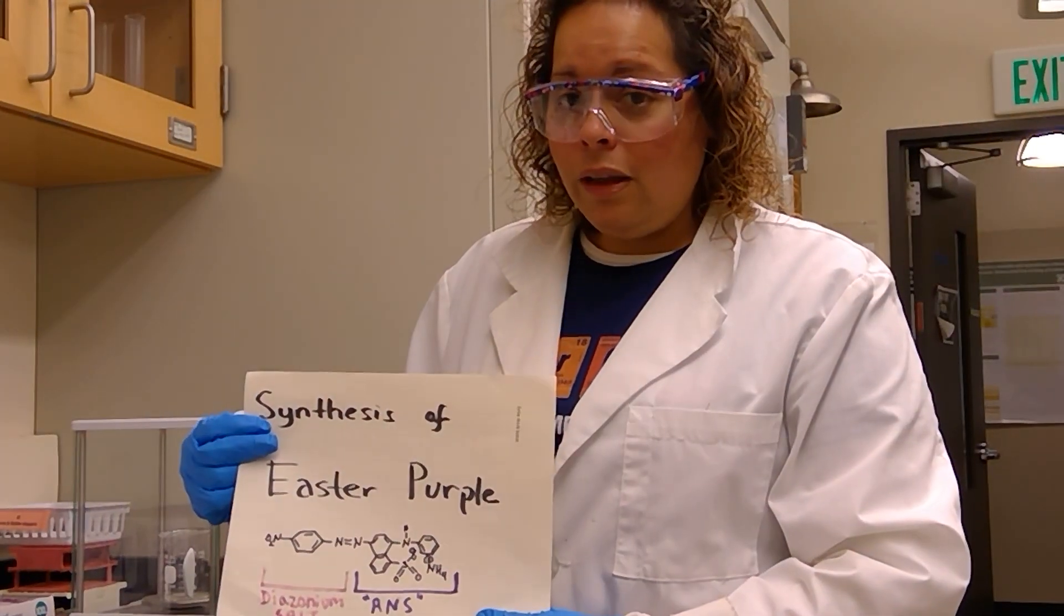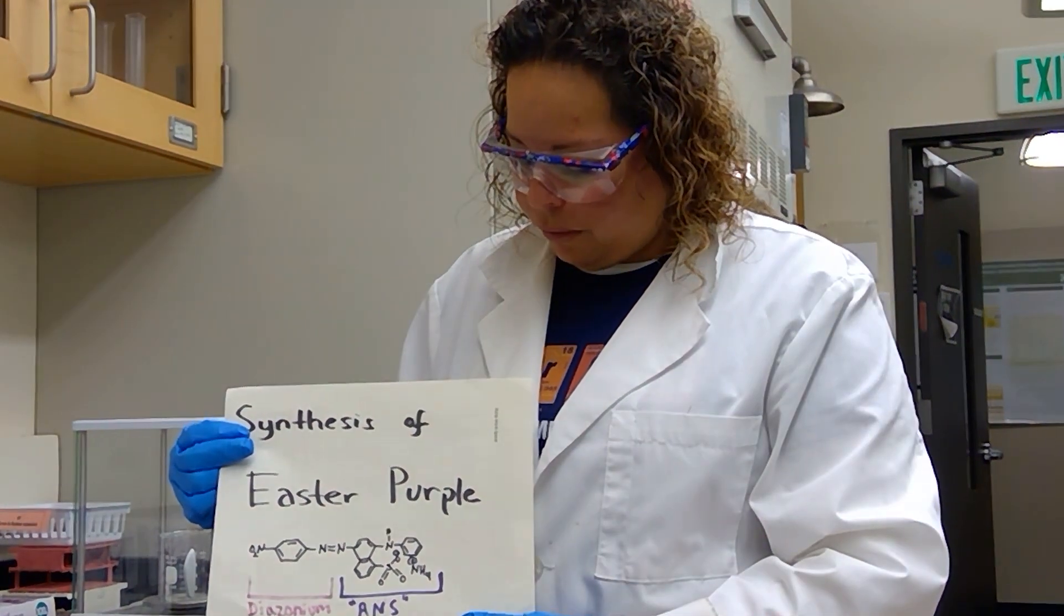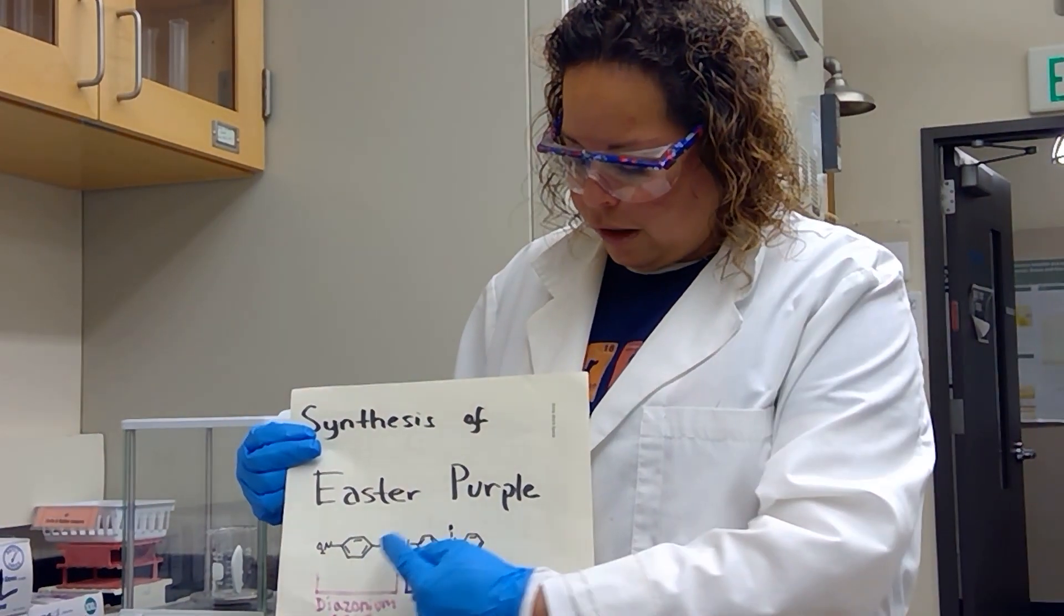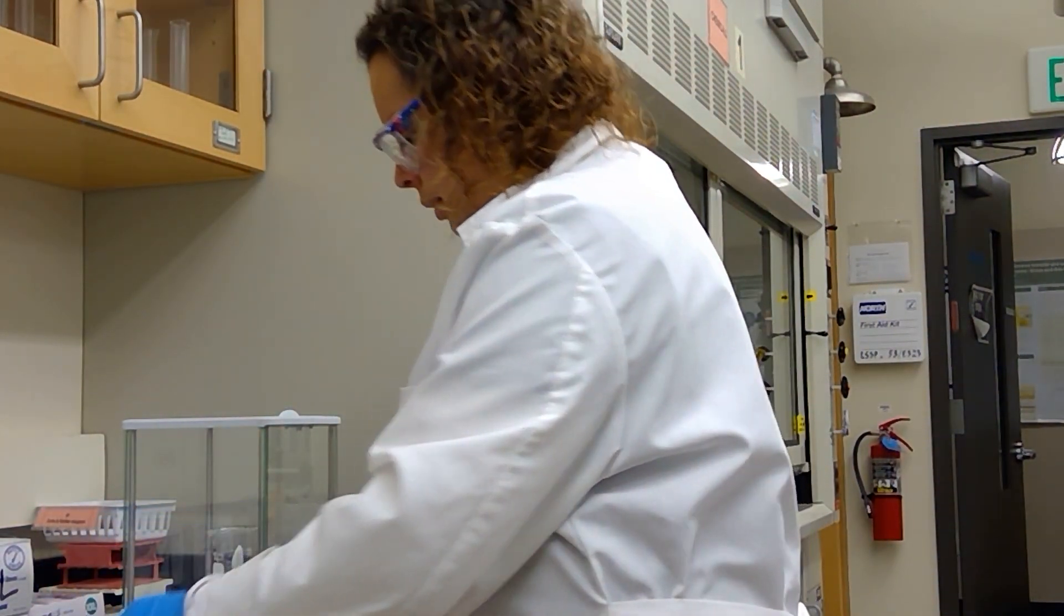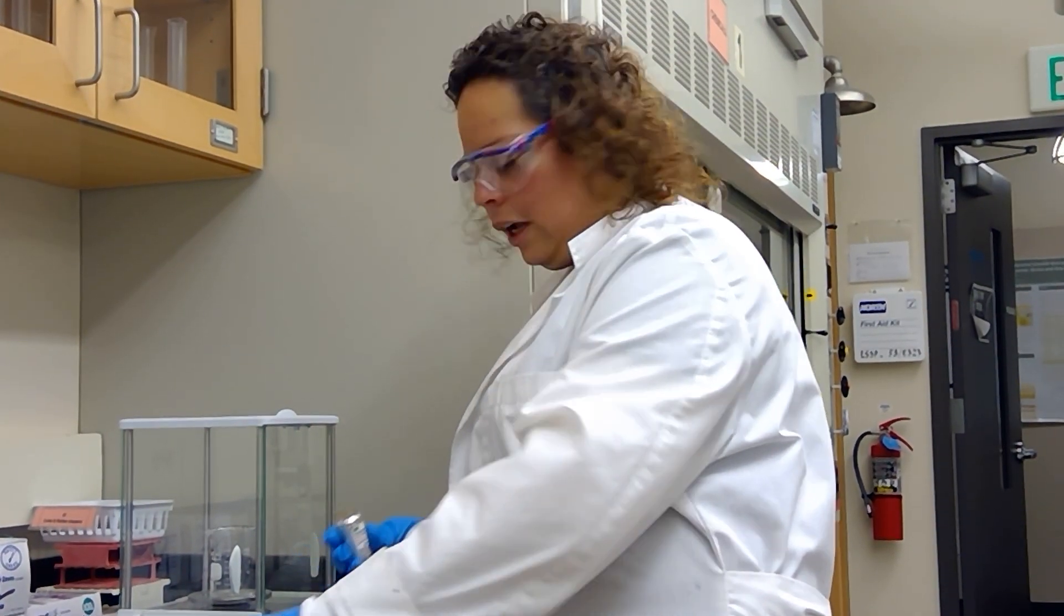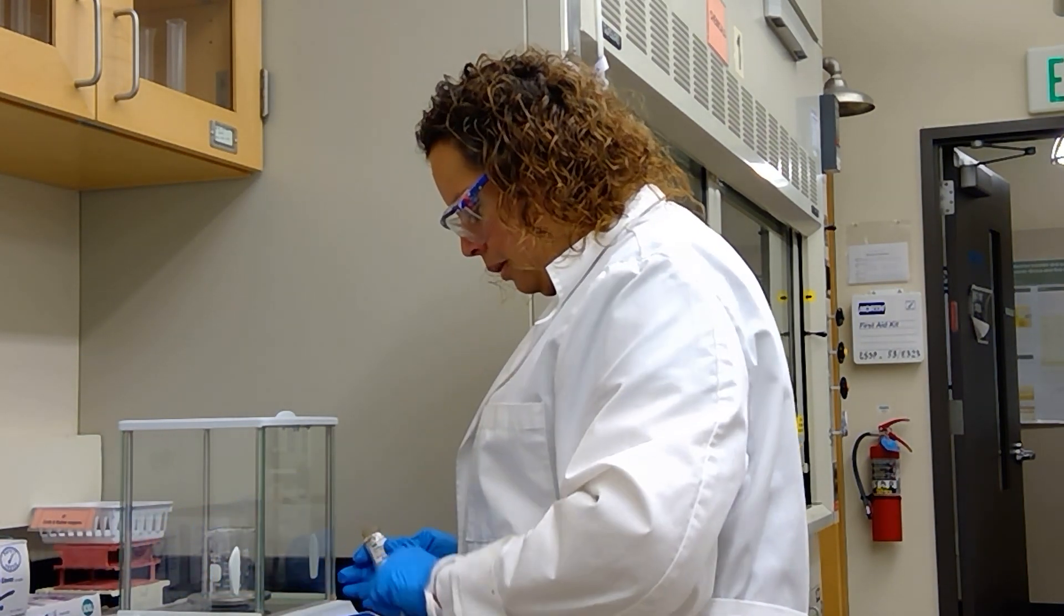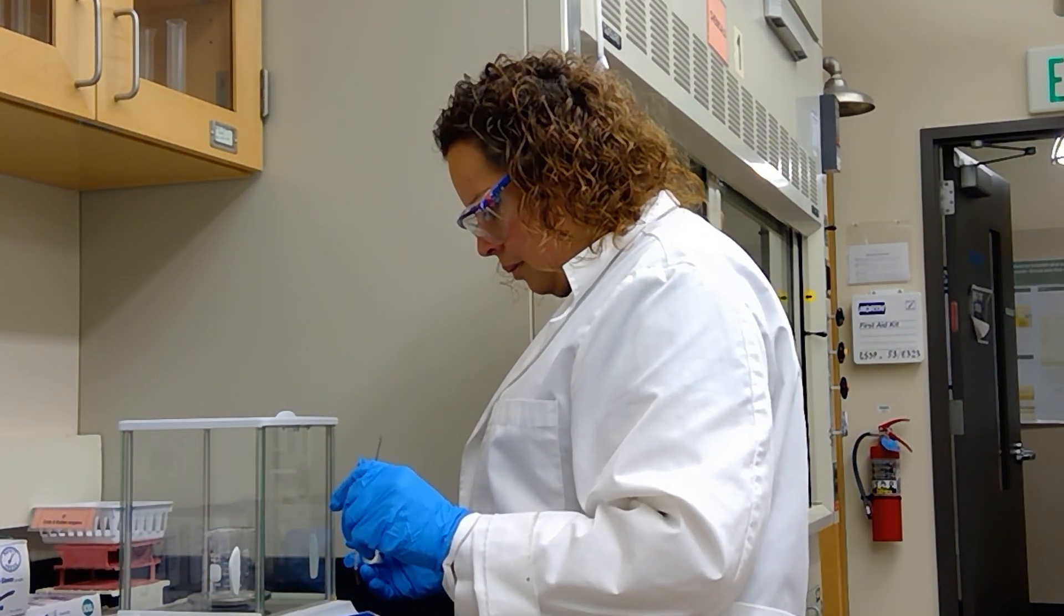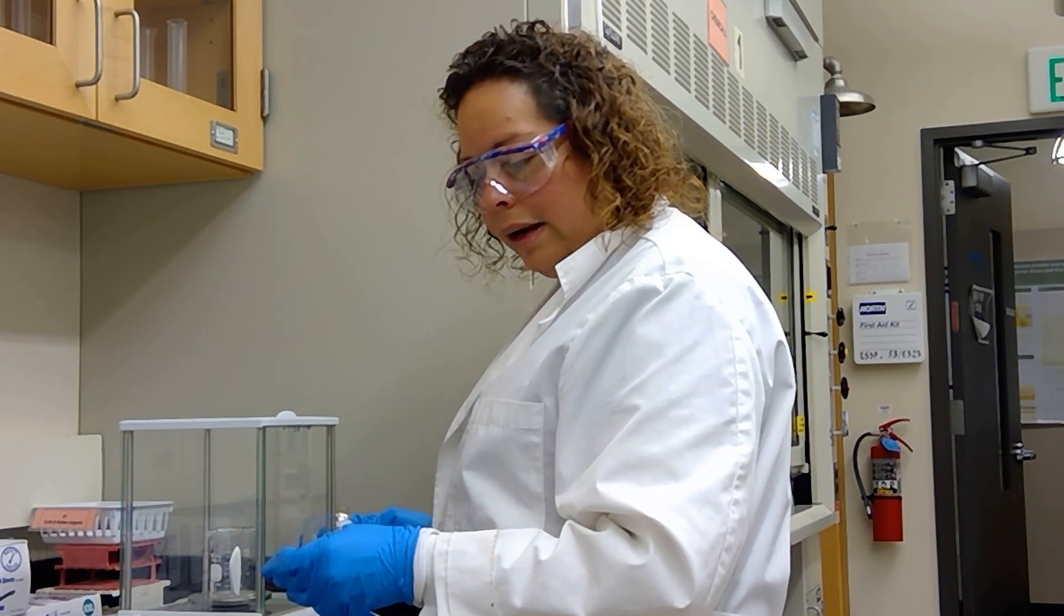Molecularly, we won't be able to see the structure once we have the solution made, but we will see the effects of the two compounds coming together on the fabric. All right, so I will measure my ANS molecule, and let me tare my beaker first, and I am measuring out 100 milligrams or 0.1 grams of ANS.